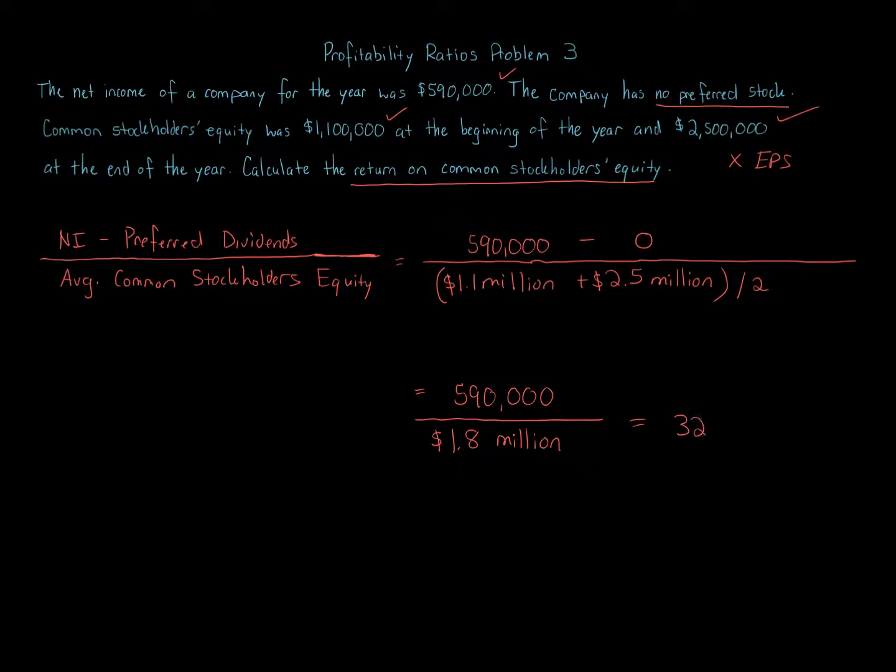And this equals 32.78%. The higher this is, the better it is for the company. It's the return on common stockholders equity. It measures the rate of profits earned on the amount invested. The higher the percentage, the better in terms of being an owner. 32% is pretty good. That's a pretty good return on investment.